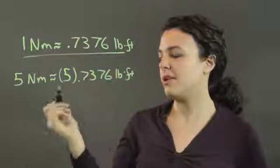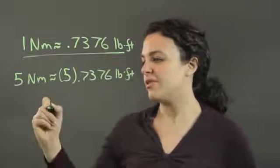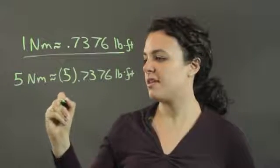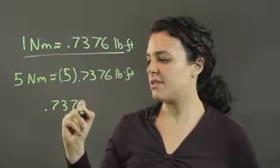You just need to multiply this number. I'll go ahead and do that for you. If you have 0.7376 times 5,